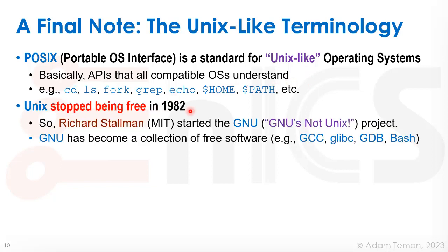Unix stopped being free in 1982. AT&T was a huge conglomerate that had Bell Labs inside it. It was broken up as a monopoly in the late 70s and finally broke up in 1982, removing the limitation on selling software. Unix essentially stopped being free. Richard Stallman, who was at MIT, was working on a project called GNU — GNU's not Unix — the idea to provide a complete replacement for everything on Unix without using one single line of code belonging to AT&T.